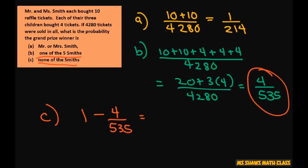So basically, that's 535 divided by 535. That's your 1 minus 4 divided by 535, and that gives you 531 divided by 535.